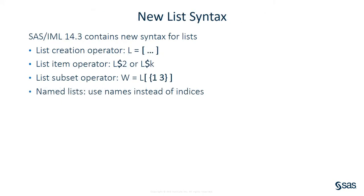In this talk, I'm going to present four ways to create and manipulate lists by using a new syntax. The new list operators are the list creation operator, which uses square brackets; the list item operator, which uses a dollar sign; the list subset operator, which also uses square brackets; and the named item operator, which uses a pound sign or hashtag symbol.